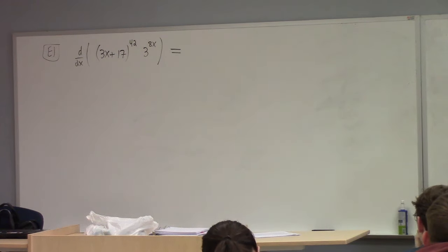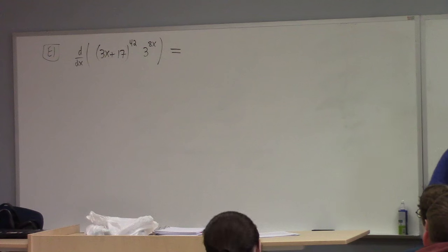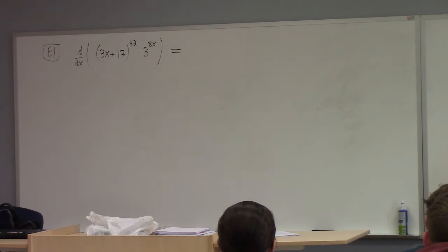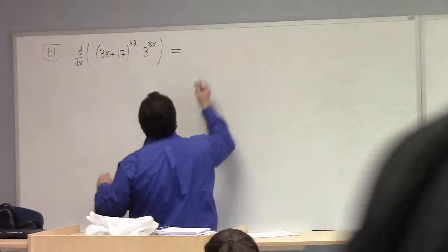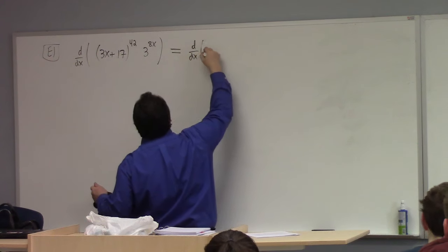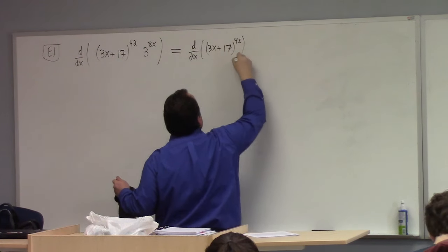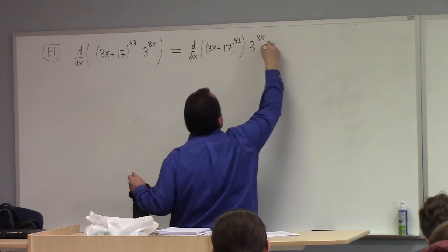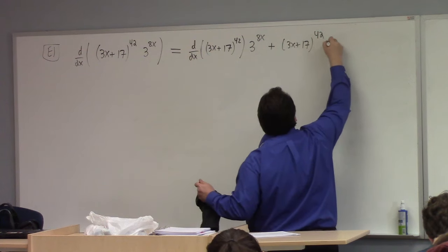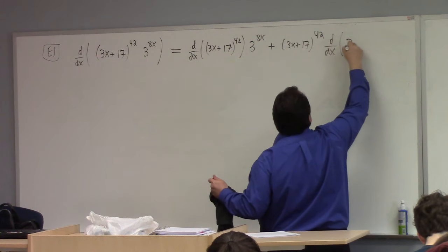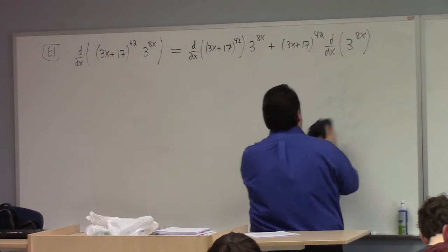First off, what do we have to do? What's the first order of business? This is a product of functions, right? So we need to use the product rule. That means we've got d/dx of (3x + 17)^42 times 3^(8x) plus (3x + 17)^42 times d/dx of [3^(8x)]. So that's my opening move.